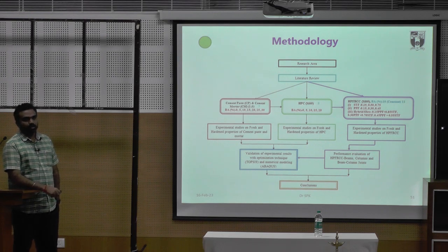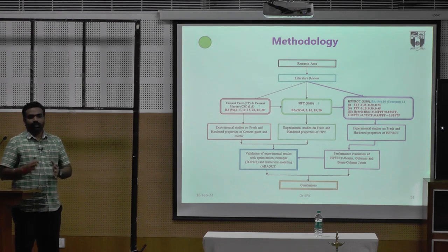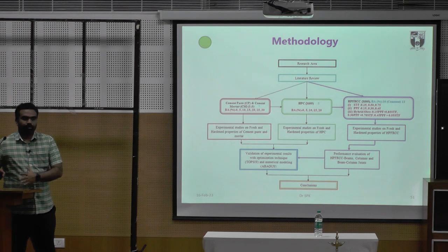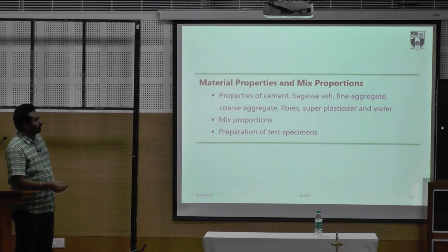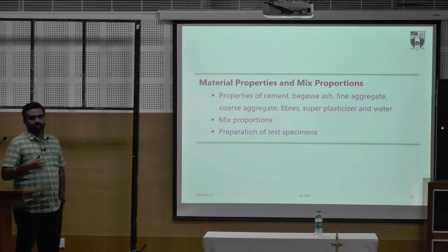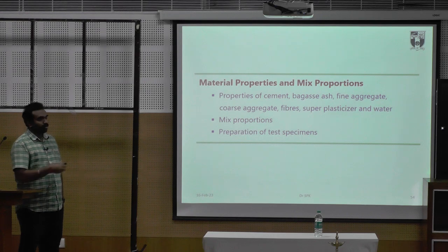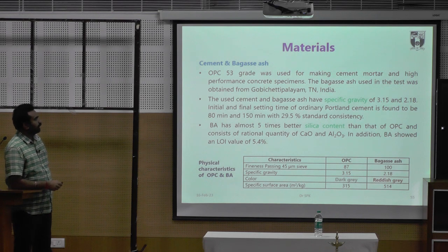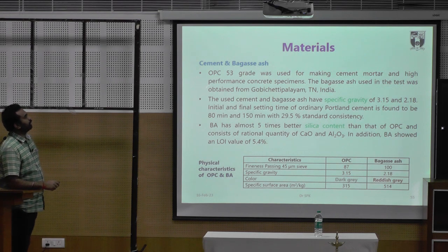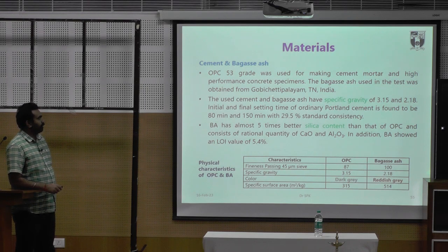For HPFRCC — High Performance Fiber Reinforced Concrete Composite — we conducted experiments on fresh and hardened properties. We cast beam, column, and beam-column joints, analyzed using software. This is the overall picture of the project: starting from cement paste, cement mortar, concrete, high performance concrete, to high performance fiber reinforced concrete. Based on literature, up to 30 percent replacement was considered. We use conventional OPC 53 grade for cement mortar and high performance concrete.